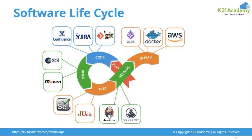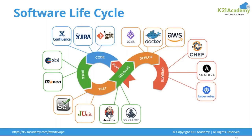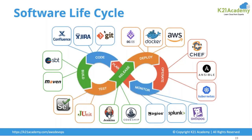After deployment, a DevOps engineer's work is not done. You need to observe and operate the application. Just deploying it is not enough — you also need to ensure that the application is operating as expected and continues to operate without any problem. For that, you use tools like Chef, Ansible, and Kubernetes to make sure the application is working as expected.